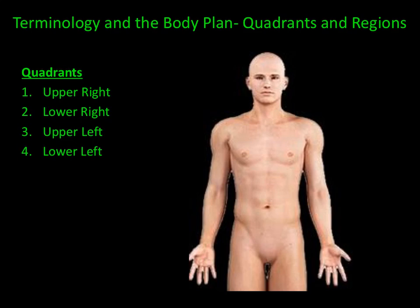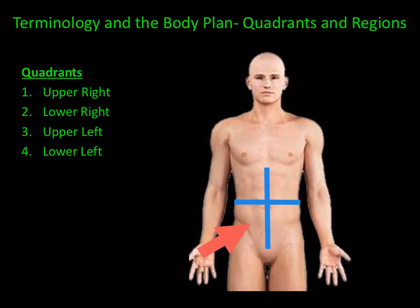Quadrants and regions help identify the locations of certain body parts or certain organs. Per quadrants, the body is split up into four sections: the upper right quadrant, the lower right quadrant, the upper left quadrant, and the lower left quadrant.